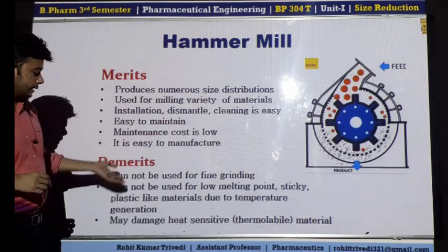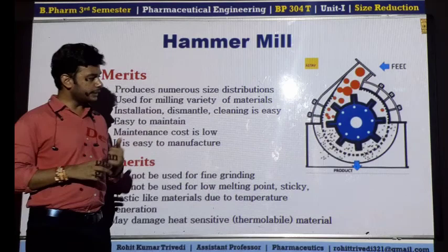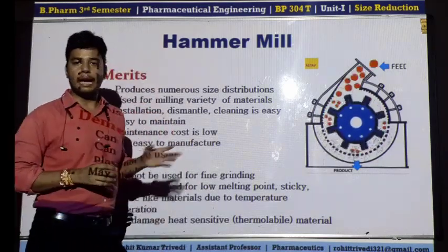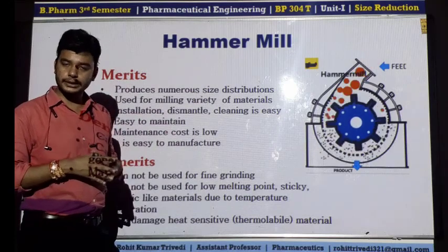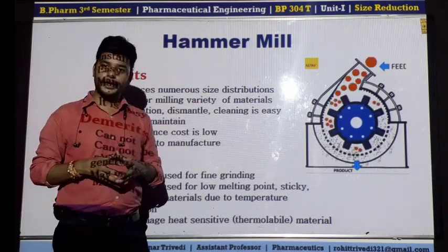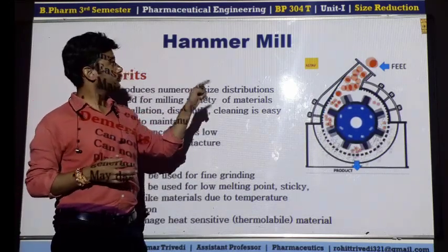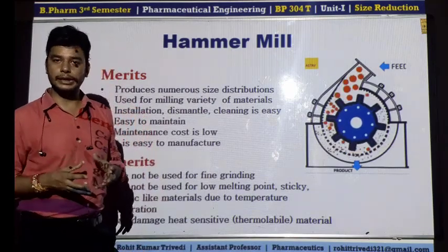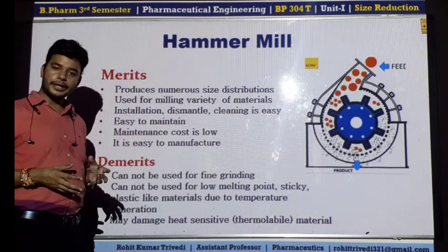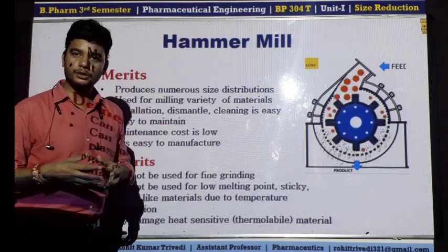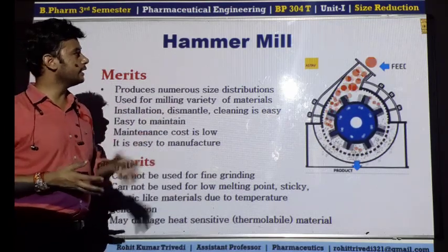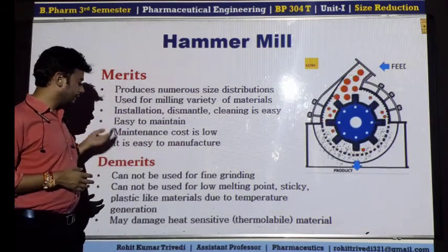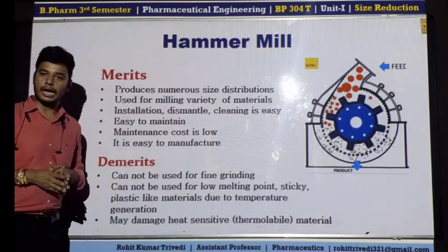Heat sensitive or thermolabile material cannot be processed in the hammer mill. As already discussed, temperature is generated during the process of size reduction in the hammer mill, and thermolabile material may get degraded or chemical degradation may occur due to the increased temperature inside the hammer mill. So these are the various merits and demerits of our hammer mill.